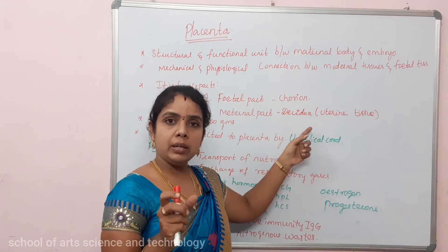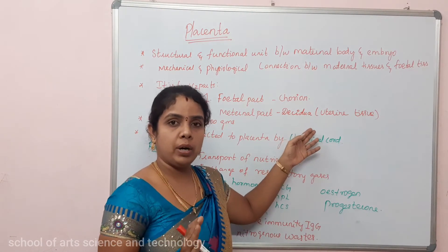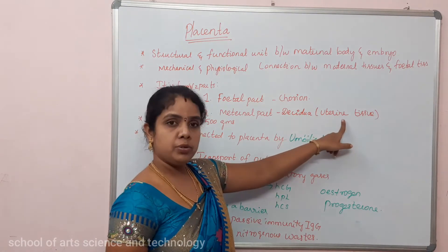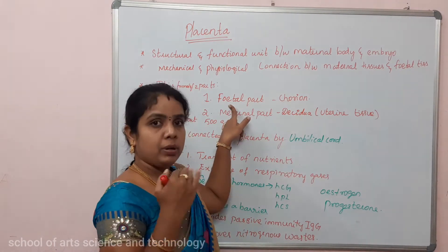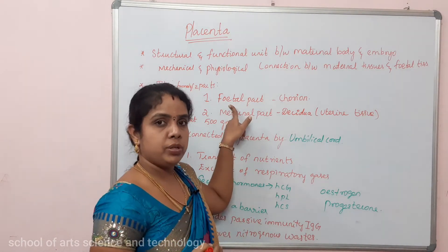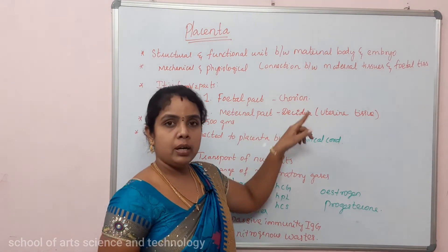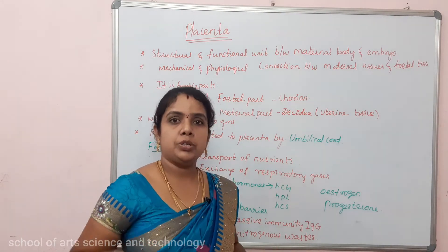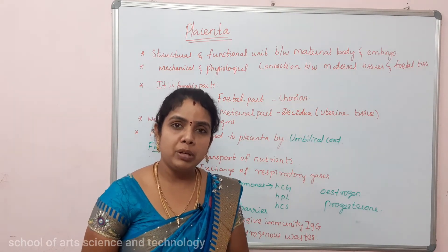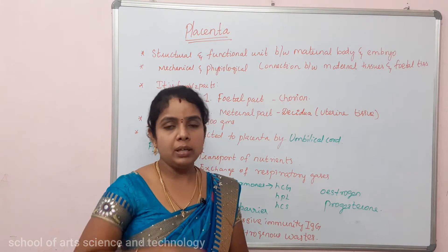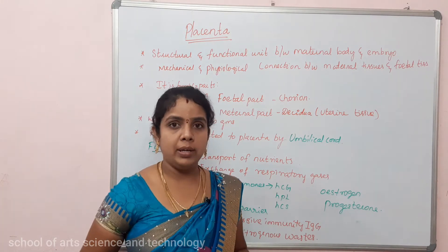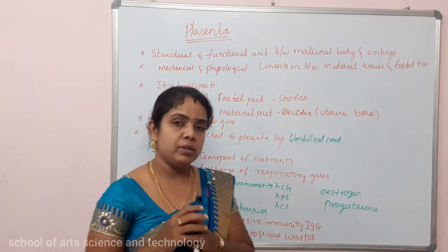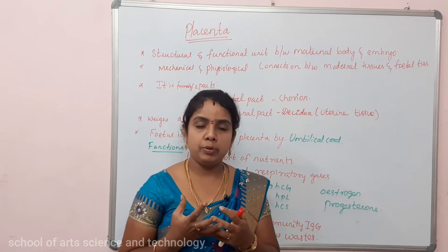The uterine tissues are deciduous. That is the mother's contribution to the placenta. The chorion, which is the outermost extra-embryonic membrane, produces finger-like projections that interface with the maternal uterine tissues.